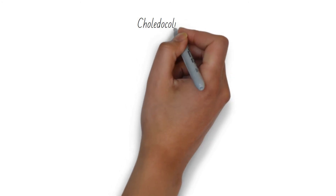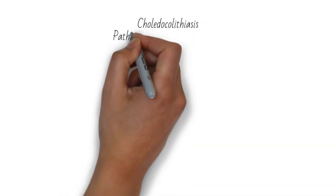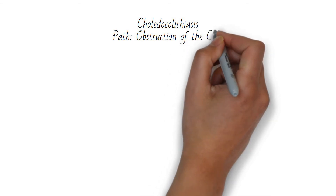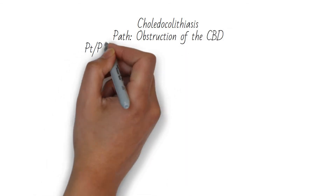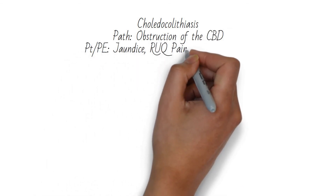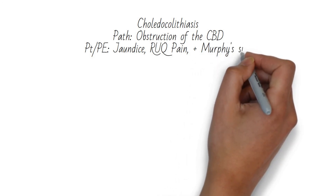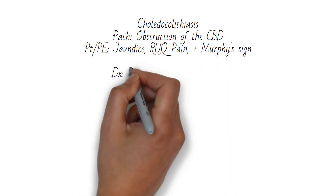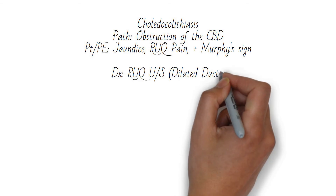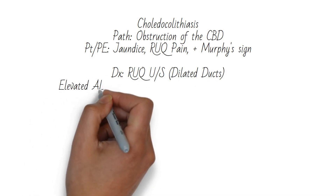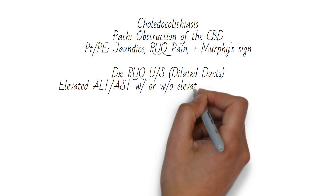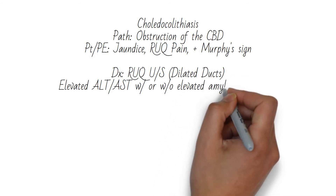Choledocholithiasis is obstruction of the common bile duct by a stone. The patient will have right upper quadrant pain and a positive Murphy sign. They may have jaundice and fever as well. Right upper quadrant ultrasound will show dilated ducts. MRCP can be used if ultrasound is not conclusive. Labs may show leukocytosis, elevated liver enzymes, as well as an elevated amylase or lipase.